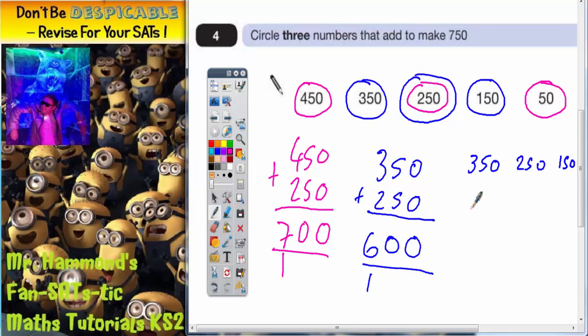Or you can have your 450, your 250, and your 50, which I've circled there in pink. Either answer is acceptable and does indeed make it up to 750.